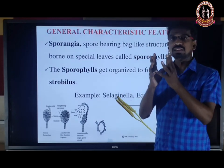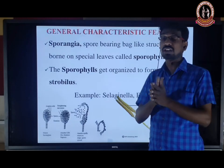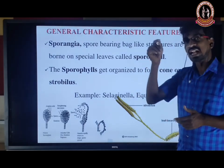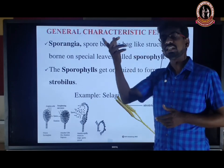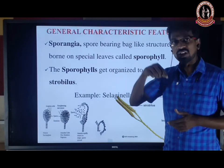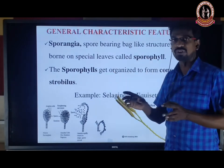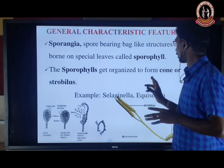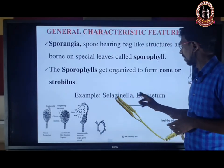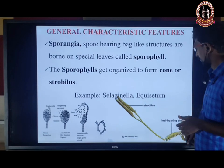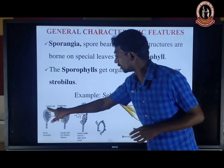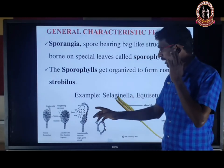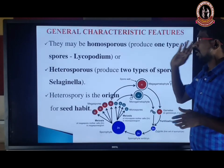Sporangia — that is the bag-like structure (sporangia is plural form; sporangium is singular form). The spore-bearing bag-like structures are borne on special leaves called sporophylls. Microsporophyll and megasporophyll are the fertile leaves. The sporophylls are organized to form a cone or strobilus — for example, in Selaginella and Equisetum. The sporangia open to release haploid spores when mature.